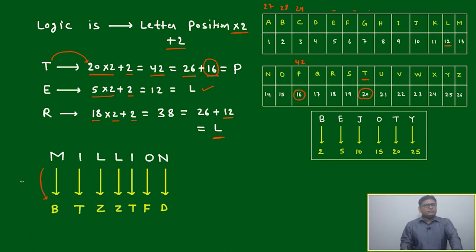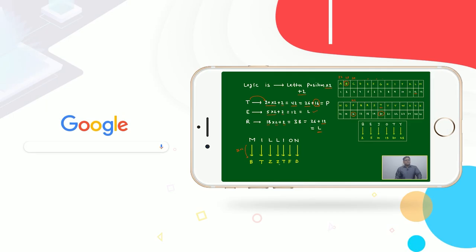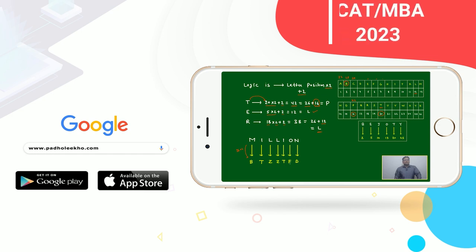28 means it will become B. 26, one cycle over, again we start: 1, 2. Or 27, 28, whatever. Similarly, I will become T, L will become Z, and L will become Z, I will become T, O will become F, and N will become D. MILLION we can represent as BTZZITFD.